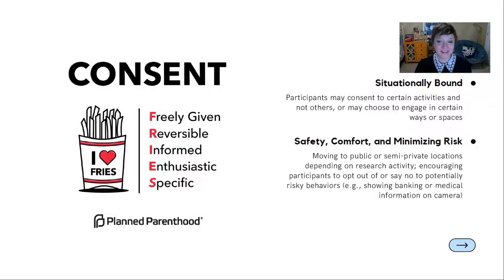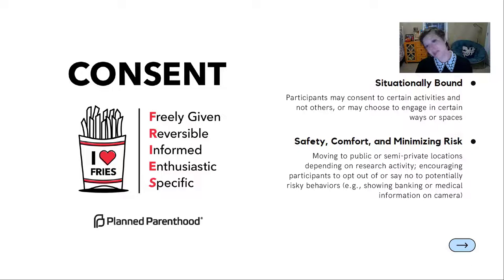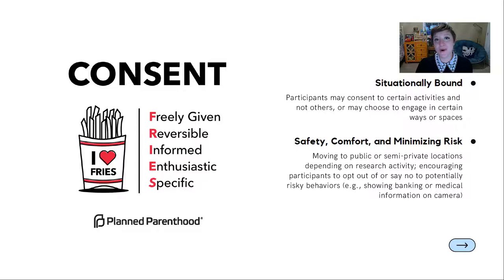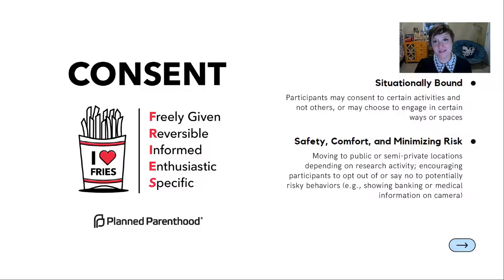This graphic from Planned Parenthood illustrates the importance of considering the contextual nature of consent. Consent to research needs to be freely given and reversible, informed, enthusiastic, and specific. This shows the importance of reminding participants — particularly those who don't typically engage in university-sponsored or user research — that they can say no to any activities they don't want to participate in. They can also change their context. For example, I had two elderly widowers in my project who were concerned about having a young woman alone in their apartments to watch them on their computers, so we instead moved to public or semi-private locations to maximize their comfort and to calm the rumor mill.